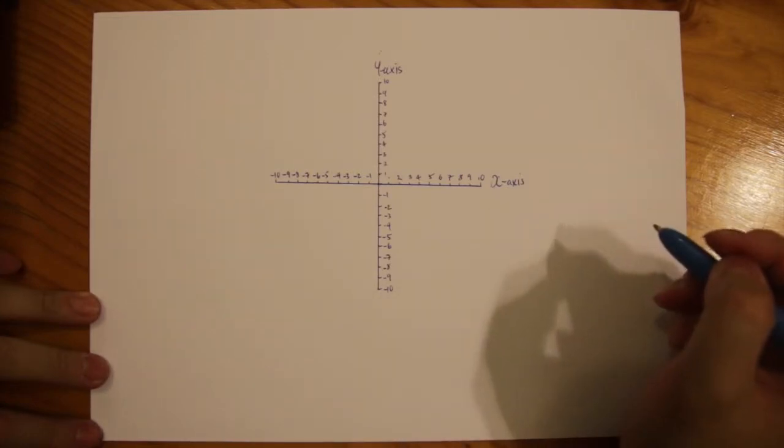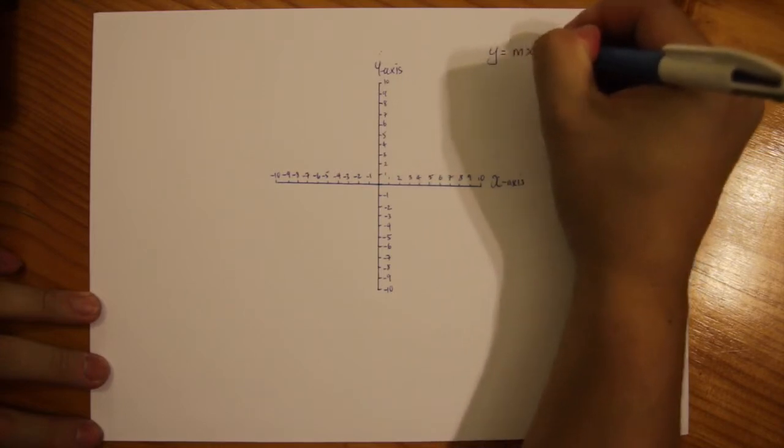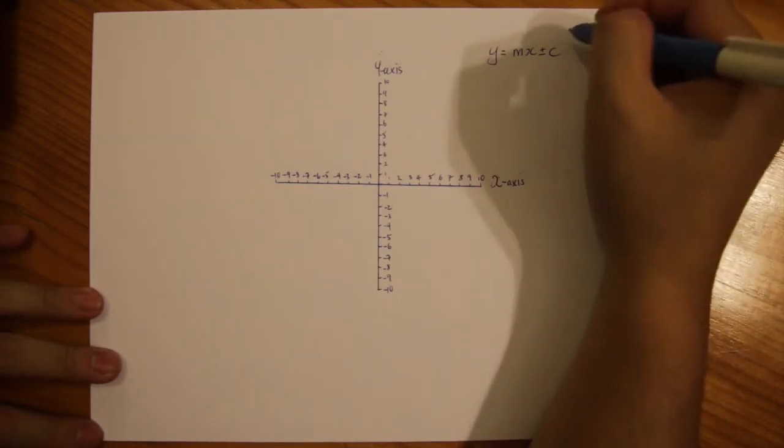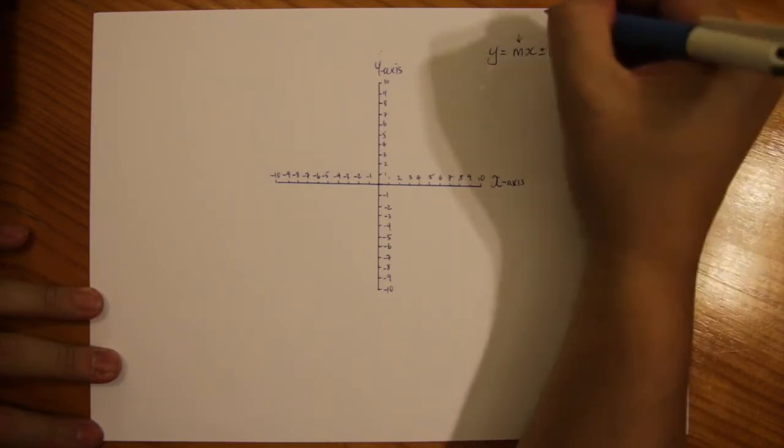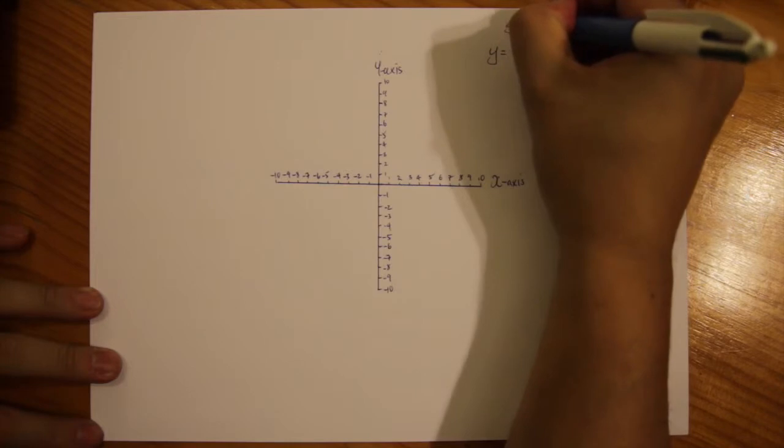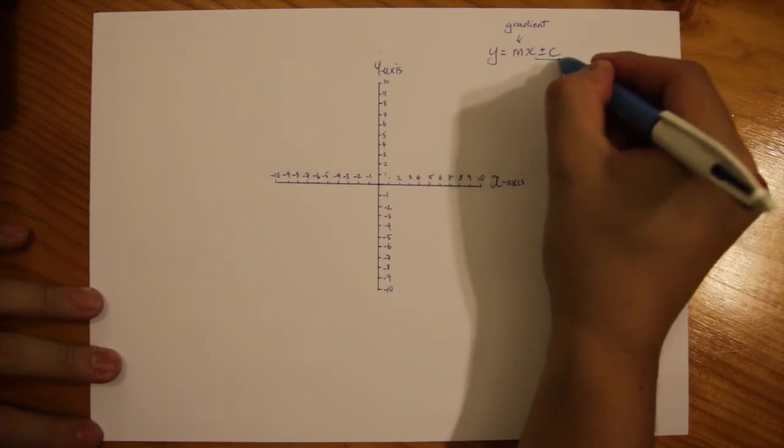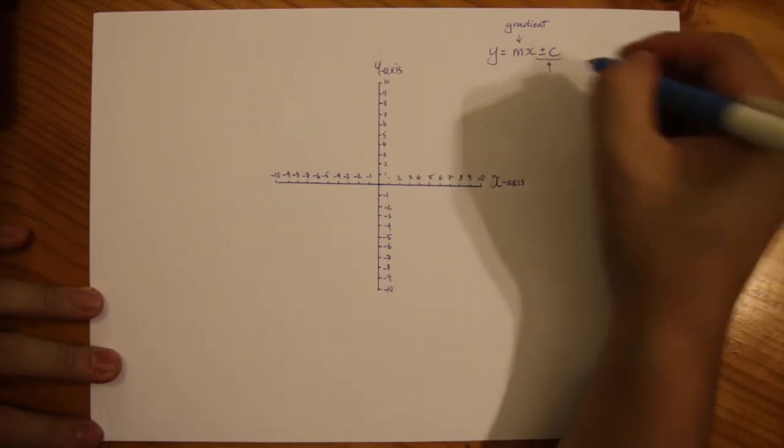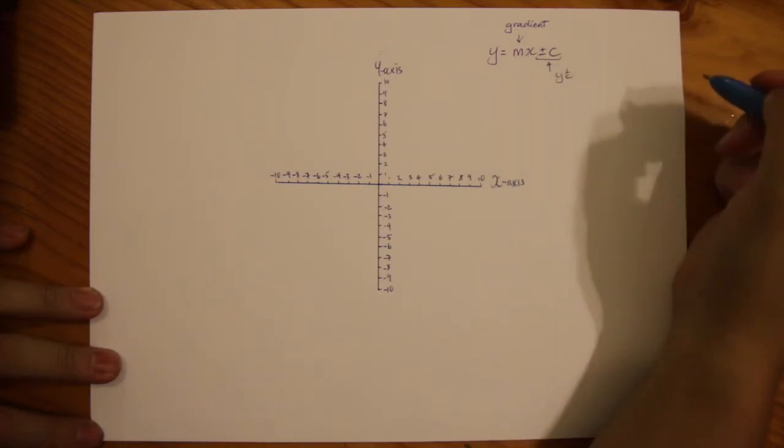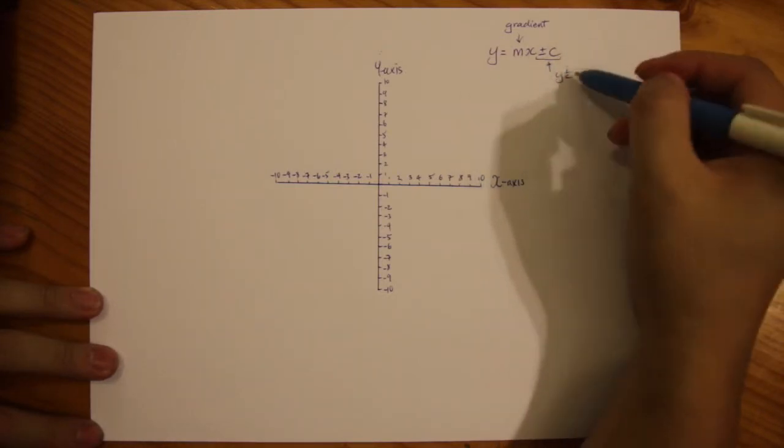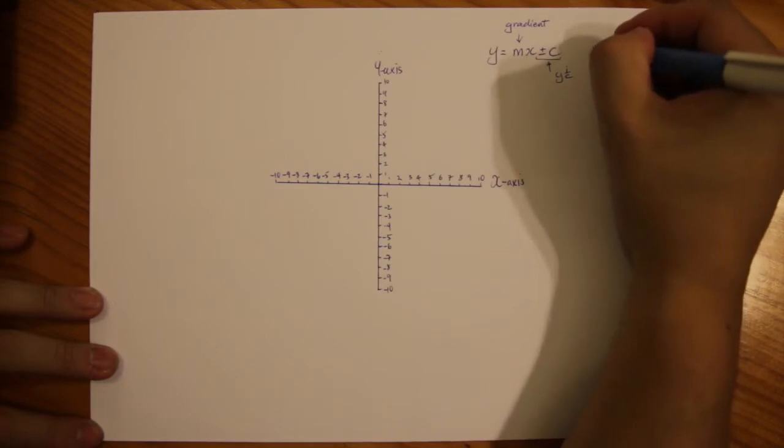The rule or formula of a linear equation is going to be in the format of y equals mx plus or minus c. And m is going to be the letter that represents the gradient or the steepness of the slope. This letter c represents also the y-intercept. m is your gradient and this is your rule for a linear equation.